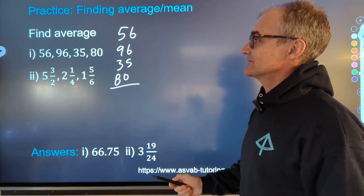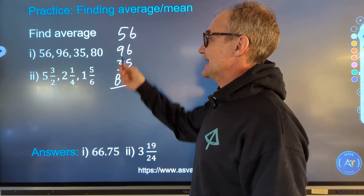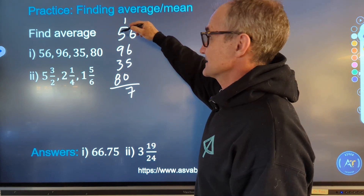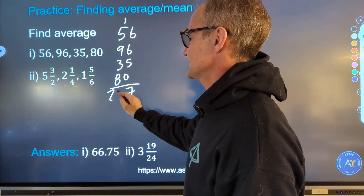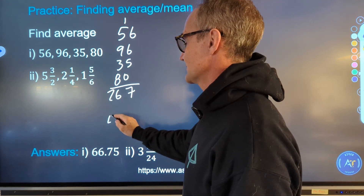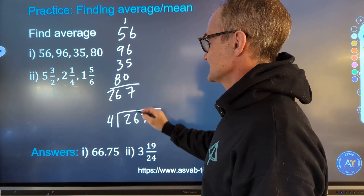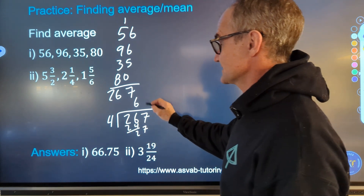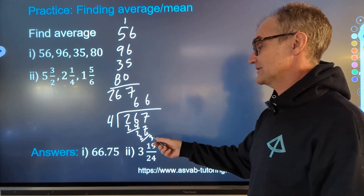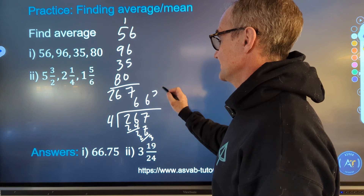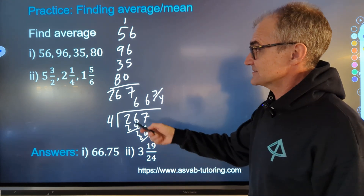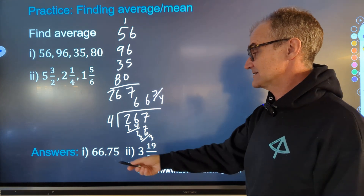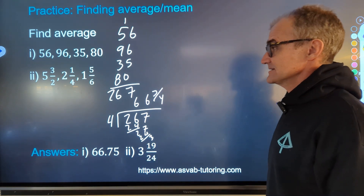Now I have these four numbers. I've got to add them up and divide by four. Six and six is twelve, plus five is seventeen — carry the one. Six and nine is fifteen; eighteen, twenty-six — so I have two hundred and sixty-seven. There are four values, so four goes into two hundred and sixty-seven sixty-six times with a remainder of three. That three goes over four to get three-fourths. So the average of these four values is two sixty-seven divided by four, which is sixty-six and three-quarters, or the decimal approximation sixty-six point seventy-five.